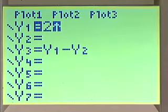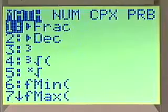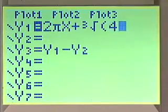2πX plus the cube root. We'll go to math function for that. Cube root of 4 and parentheses. And that will be our equation 1.